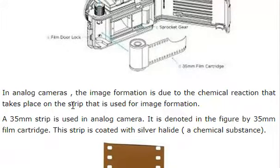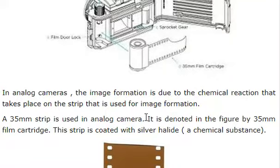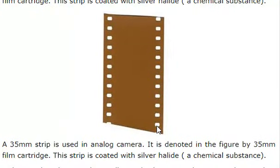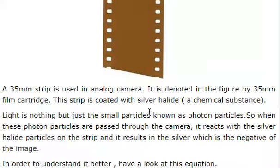What we have shown is the format of image formation. The image formation is due to the chemical reaction that takes place on the strip that is used for the image formation. So this chemical formation is used for chemical formation.